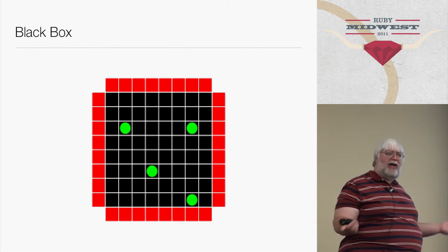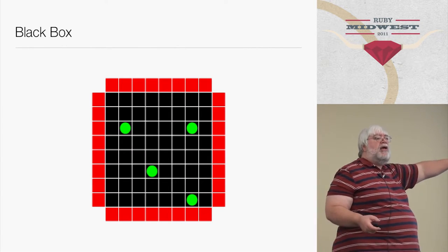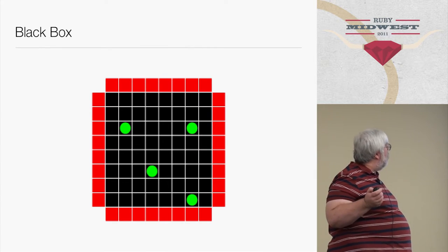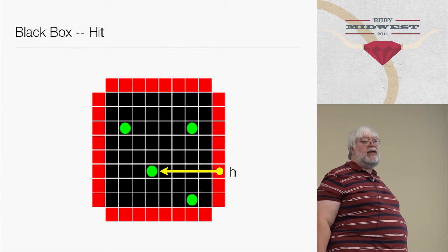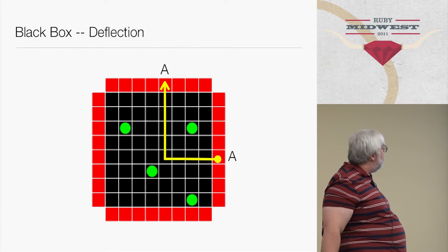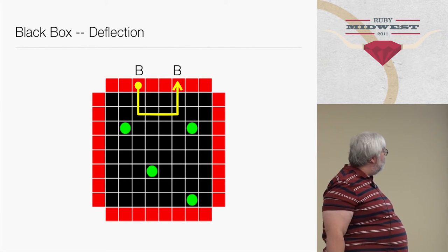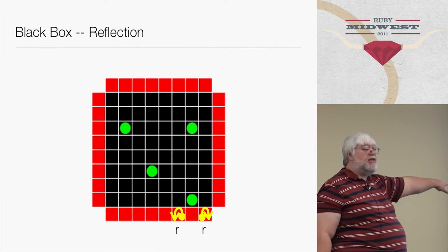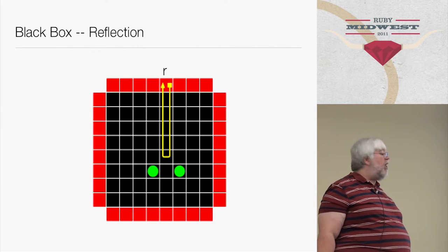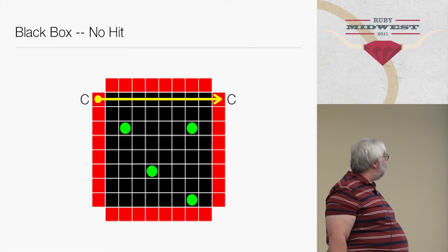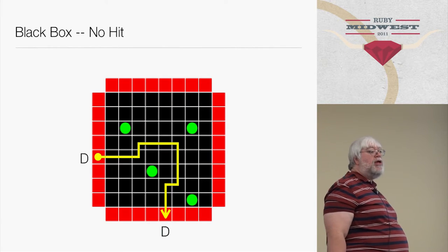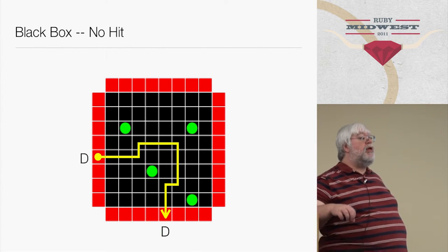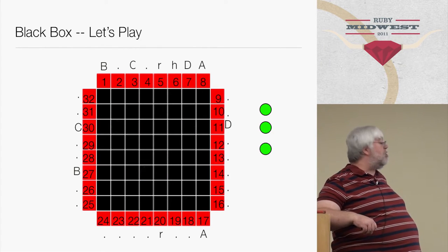It's called Black Box. One player secretly puts some marbles into this 8x8 grid, and the other player probes the box by sending in signals from the side. You can get a hit, a bounce, a double bounce where it reflects back out, an immediate reflection if something is on the edge, or a reflection from two things. And of course you can always go straight through, or get some kind of weird passing. The second player doing the probing doesn't know where those green dots are, so to him the board will look something like this.